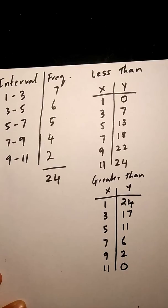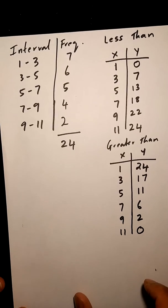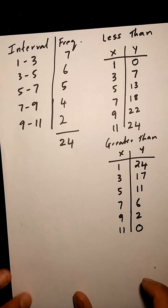The greater than table should always end at 0. Once you have these two tables here, you can draw your graph from these two tables. Remember both lines will go on the same graph.